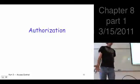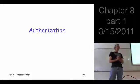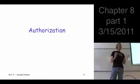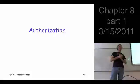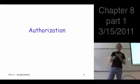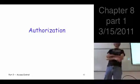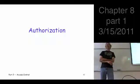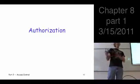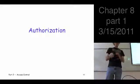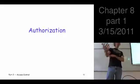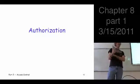Last time we finished up Chapter 7, which is Authentication. What is authentication? Are you who you say you are? So you come up to your computer, you claim to be somebody, and the computer says prove it. You have to provide a password or a biometric or something along those lines.